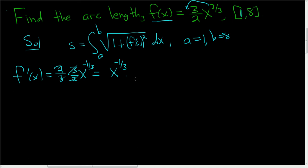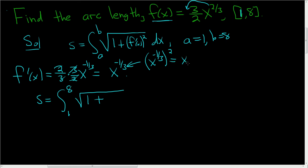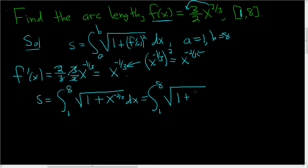Now we'll just plug everything into the formula. So little s is the definite integral from 1 to 8 of the square root of 1 plus — when you square x to the negative 1/3, you get x to the negative 2/3, since 2 times negative 1/3 is negative 2/3 — dx. It might not be obvious how to integrate this, so we'll rewrite it as the definite integral from 1 to 8 of the square root of 1 plus 1 over x to the 2/3, dx.